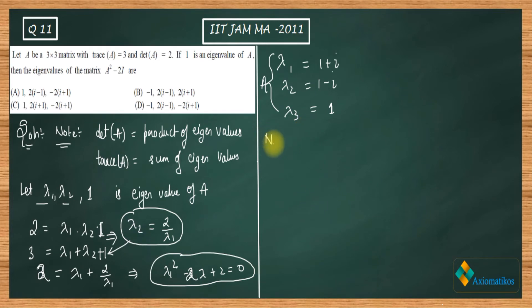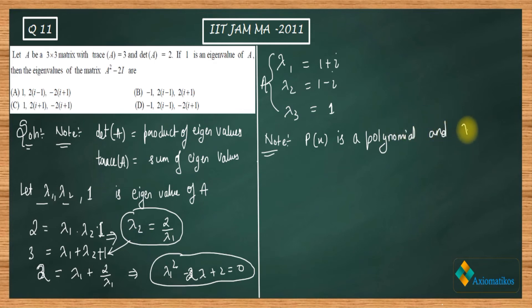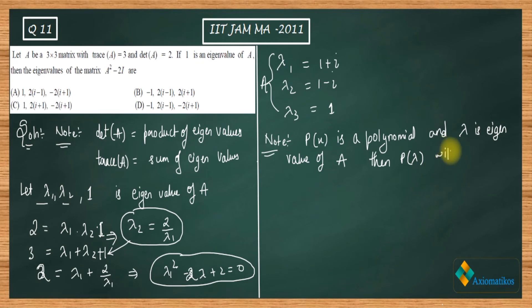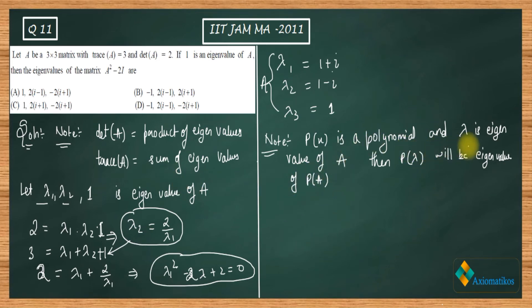Now I will show you a note. Suppose p(x) is a polynomial and lambda is an eigenvalue of A, then p(lambda) will be an eigenvalue of p(A). This is the note — if p(x) is a polynomial and lambda is an eigenvalue of A, then p(lambda) will be the eigenvalue of p(A). This note will be very helpful for us in this question.